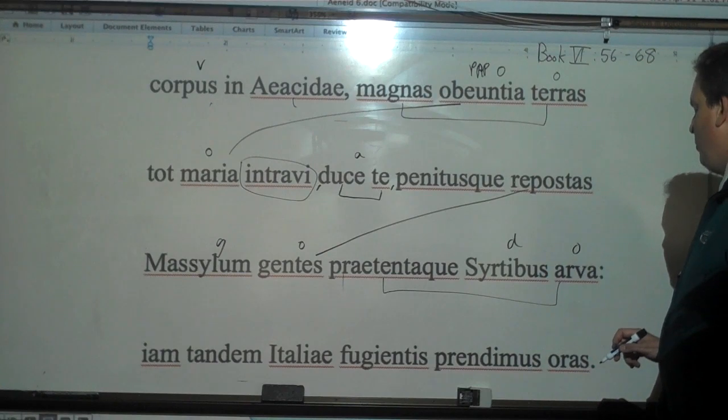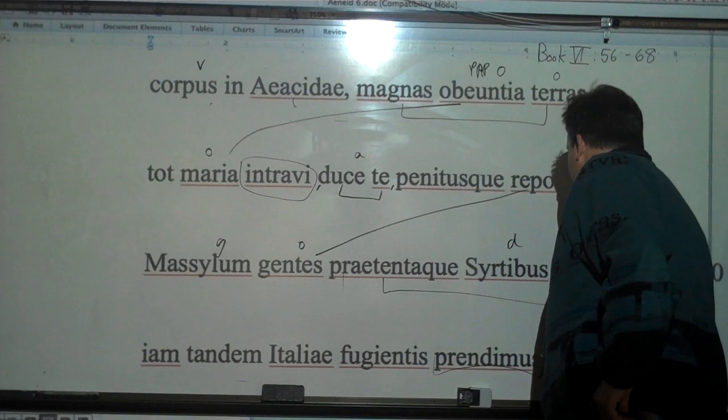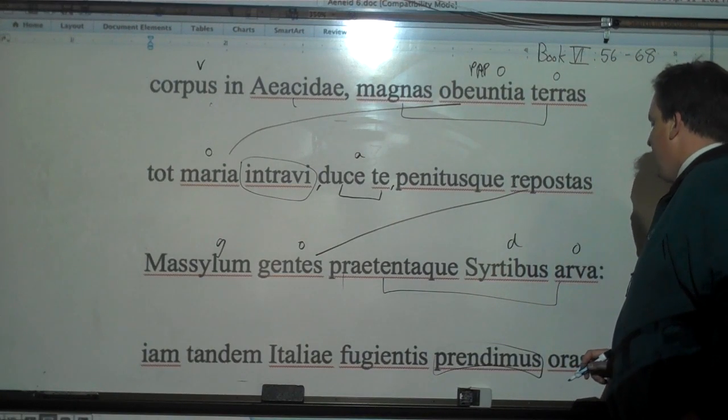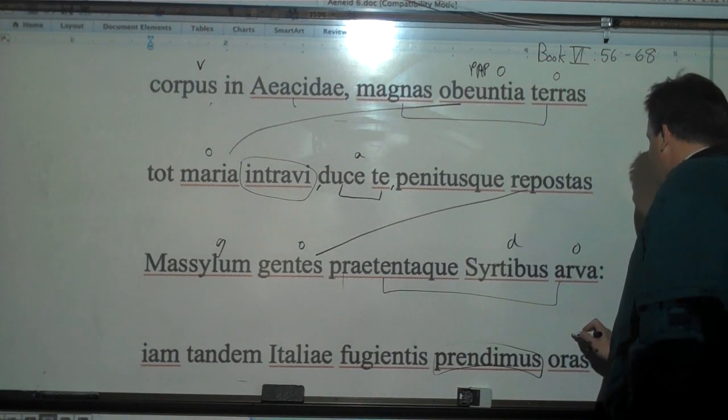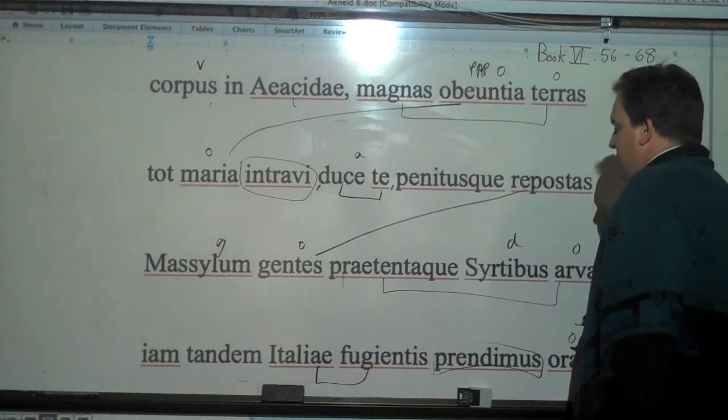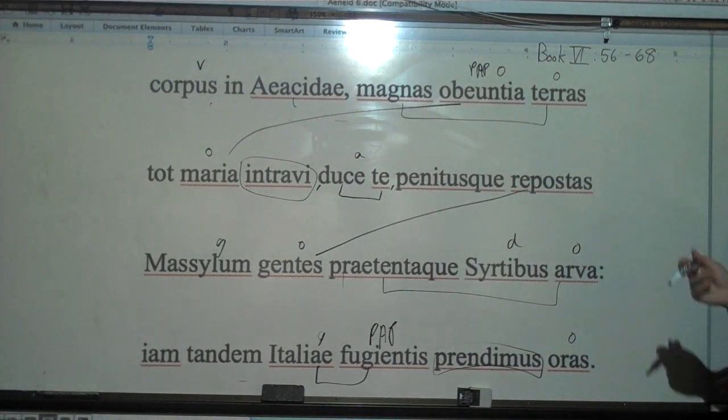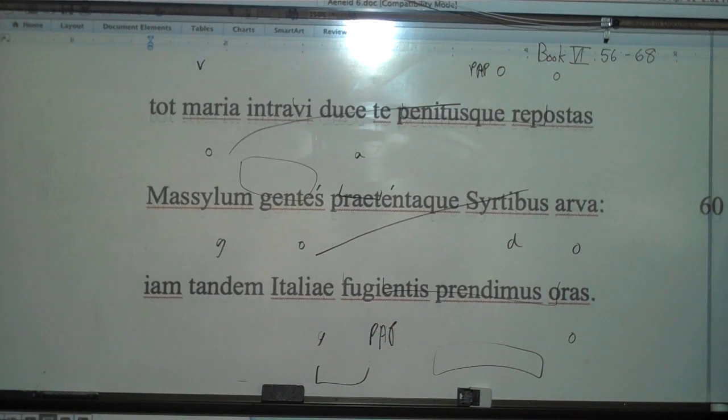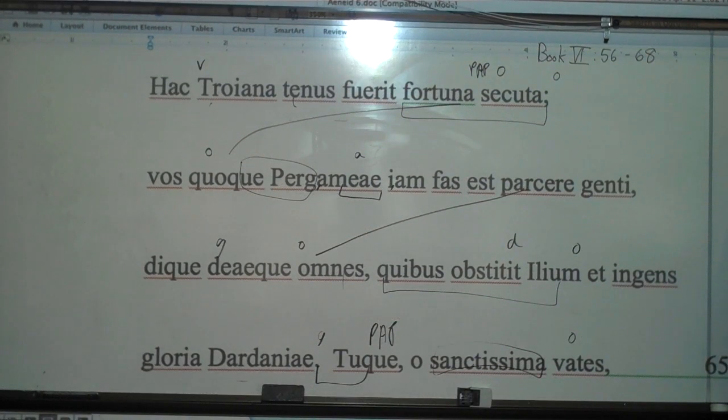And finally now, we prehendimus. This is really prehendimus. It's been shortened from prehendo. I know it doesn't even look like prehendimus. And we have finally grabbed the shores, or we have grabbed the shores of fugientis Italiae, of fleeing Italy. And there we go. We'll keep going here. Scroll down.